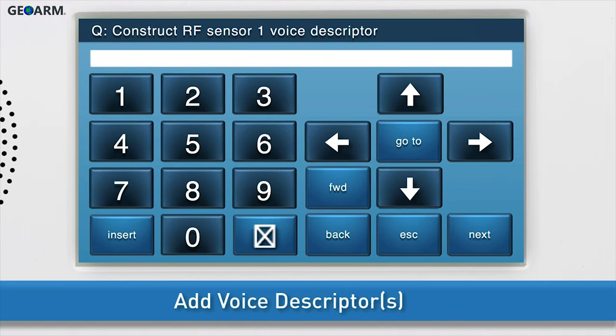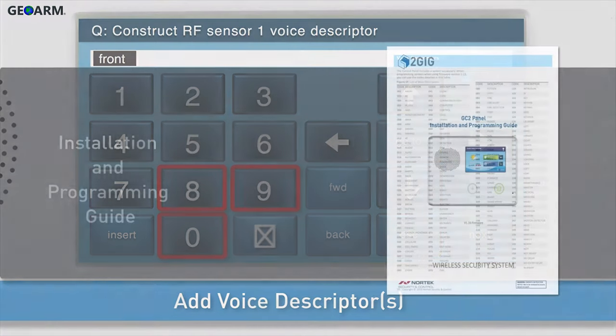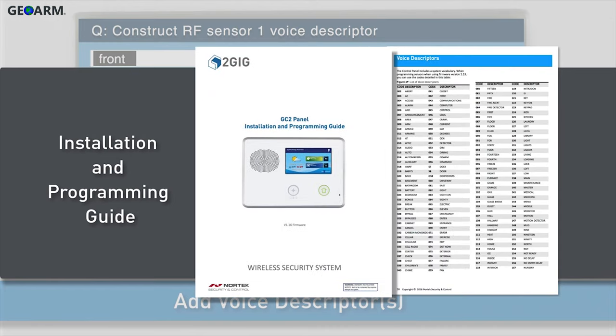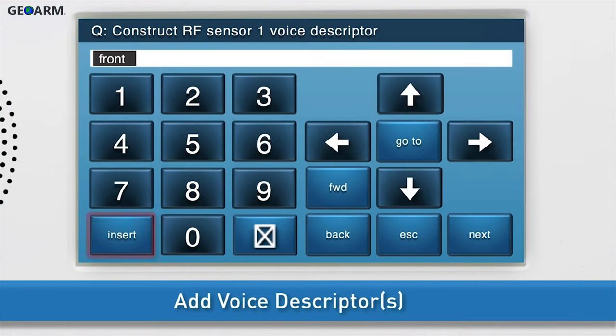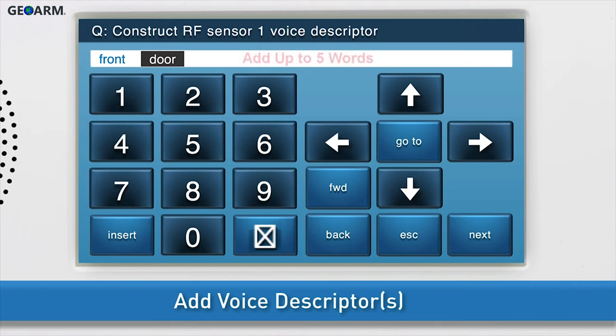Next, add the voice descriptors. Press Insert. The word abort will automatically appear in the answer box. Change the word by either using the right and left arrow buttons, or by typing the word's three-digit code using the keyboard. For a list of all voice descriptors and their associated codes, see the Installation and Programming Guide. To add another word, press Insert again and repeat the steps just discussed. You can add up to five words. Once the desired word or words displays in the answer box, press the down arrow to go to the next sub-question.